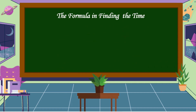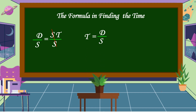What is the formula in finding the time? The formula for time is derived from the distance formula D = ST. We eliminate S from the right side by dividing both sides by S, so the remaining item on the right side is T. Therefore, T is equal to D divided by S.